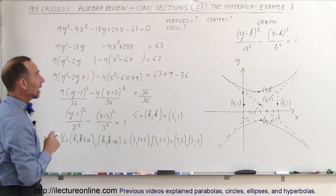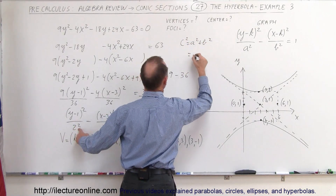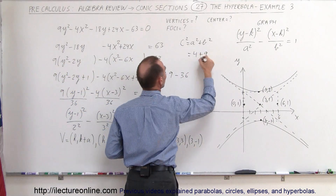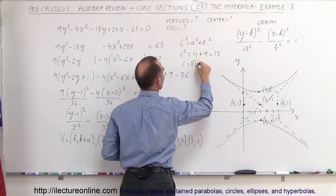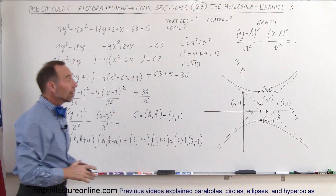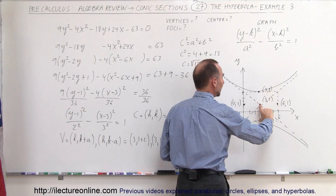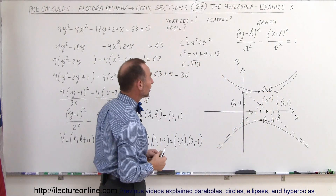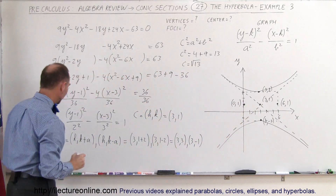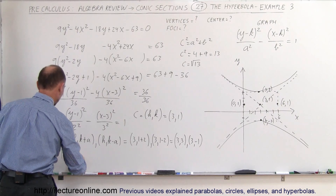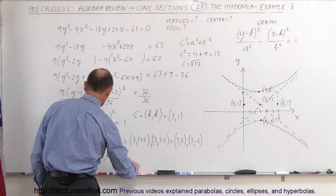To find the foci, we use the relationship c squared equals a squared plus b squared. Here a squared is 4 and b squared is 9, so c squared equals 13, meaning c equals the square root of 13. The foci lie along the vertical axis, at a distance of the square root of 13 above and below the y value of the center. So the foci are at (h, k plus c) and (h, k minus c).